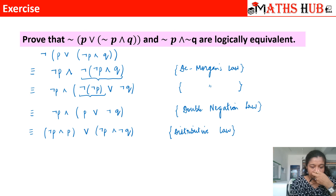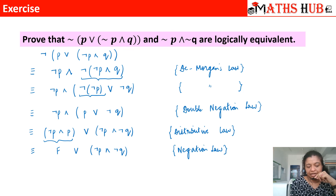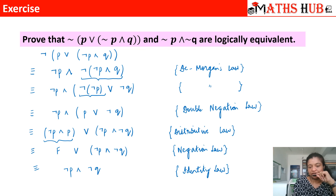Now we apply the negation law: negation P AND P is always a false statement. So we get F OR (negation P AND negation Q). Finally, by the identity law, F OR (negation P AND negation Q) is equivalent to negation P AND negation Q — which is exactly what we needed to prove, showing the two statements are logically equivalent.